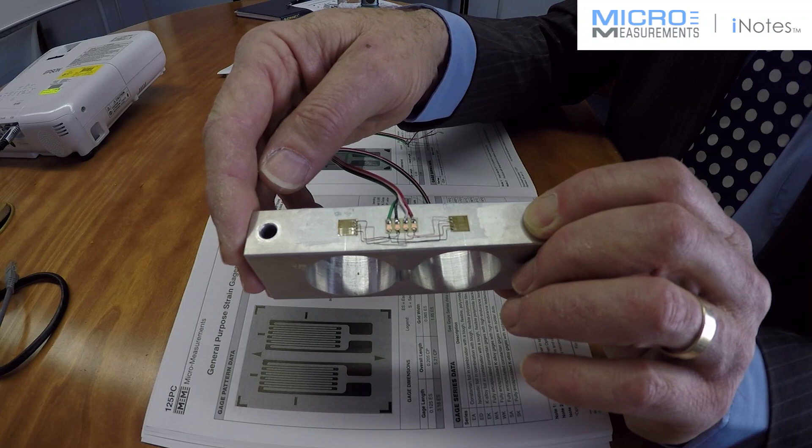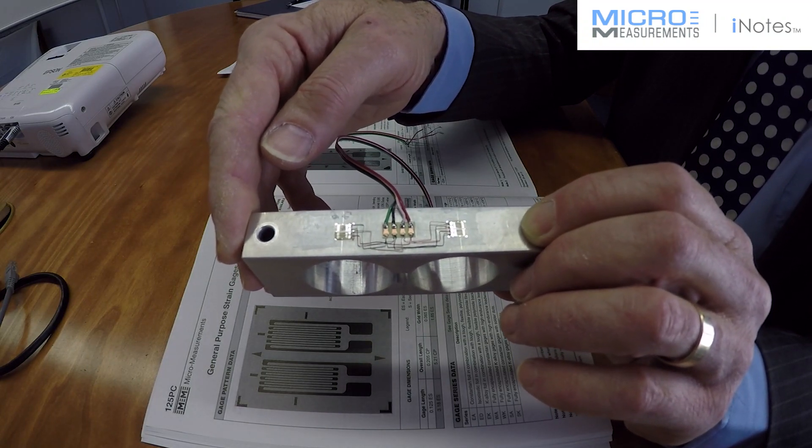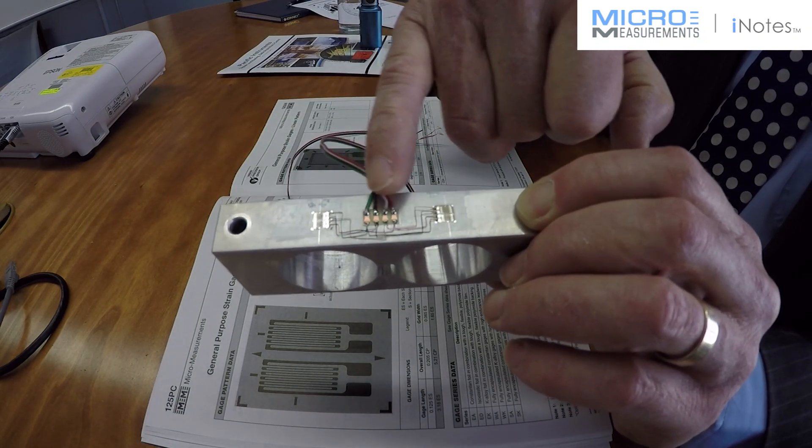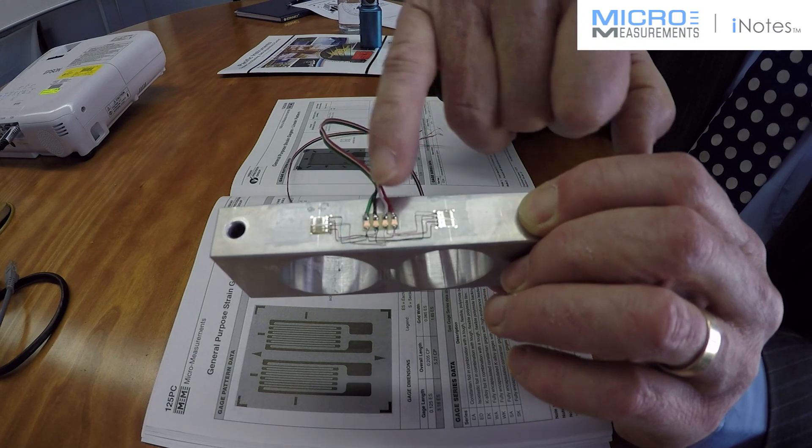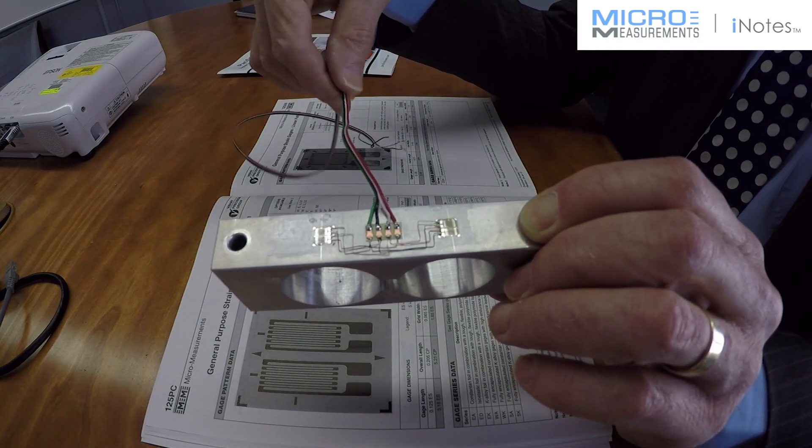Now this load cell was bonded using a cyanoacrylate which we call Mbond 200 and is supplied by Micromeasurements. Also we have applied, as you will see here, some solder pads which we can take the fine wires that come from the strain gauges to, to be able to exit with the larger instrumentation weight cable.